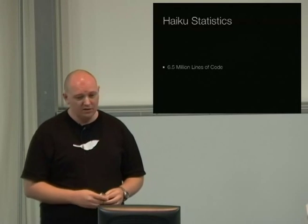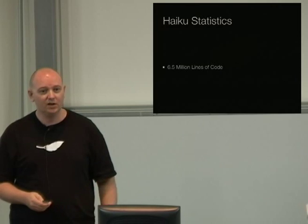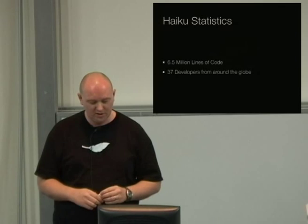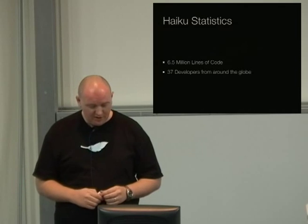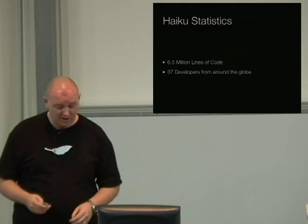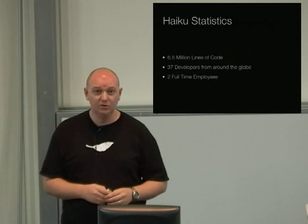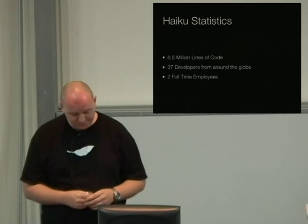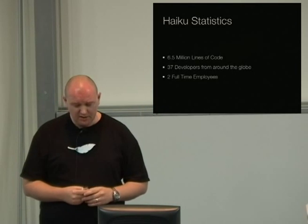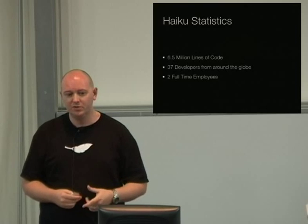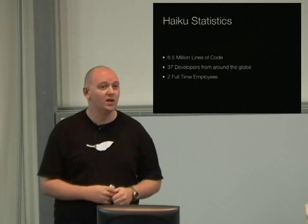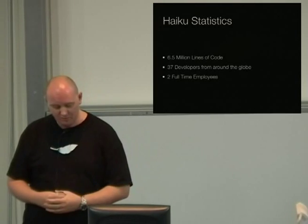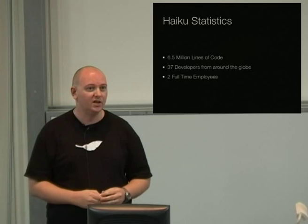Just some stats on Haiku: there are currently six and a half million lines of code, contributed from over 37 developers from around the globe. The Haiku team is still relatively small. We currently have two full-time employees being paid with donations from the website. One of them is working on the wireless stuff, and the other is working on critical app server bugs, the media player, and the media kit.